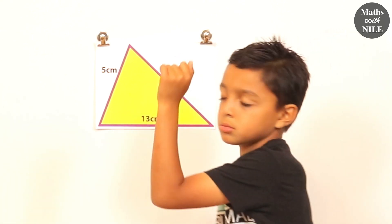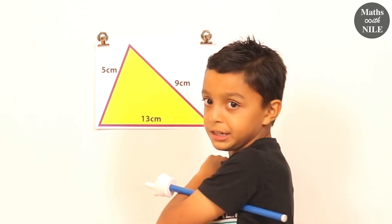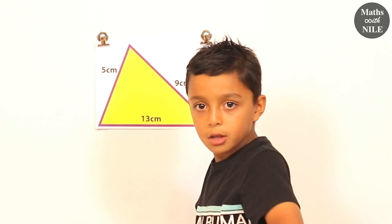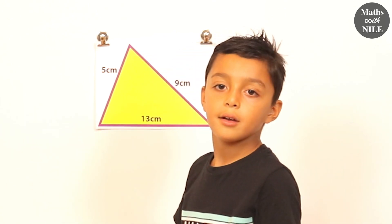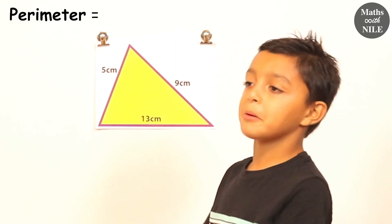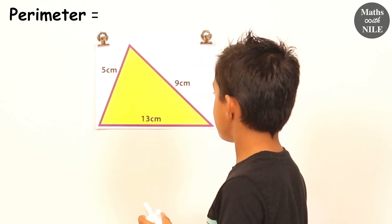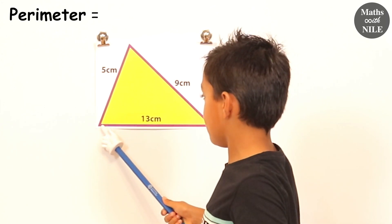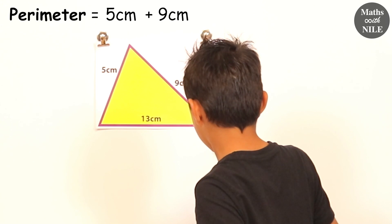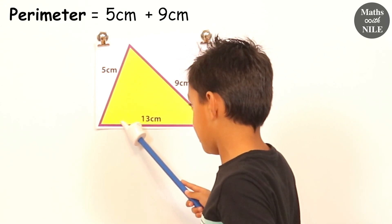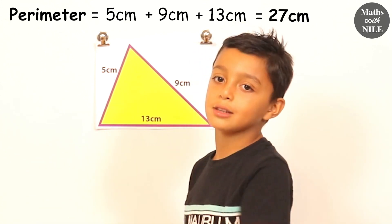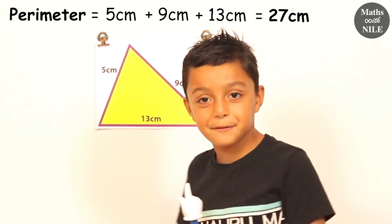What do you have behind you now? Another scalene triangle. And remind us, why is it a scalene triangle? Because it has three different sides. And what are the lengths of the three sides? 5 centimetres, 13 centimetres and 9 centimetres. Maybe I'll do the 5 with the 9 first — that's 14 centimetres. And then 14 centimetres add 13 centimetres is 27 centimetres. So the perimeter is 27 centimetres.